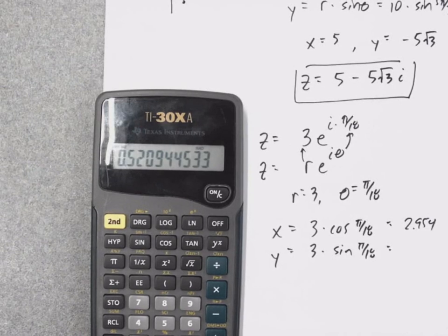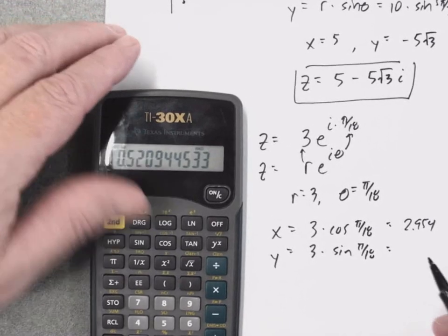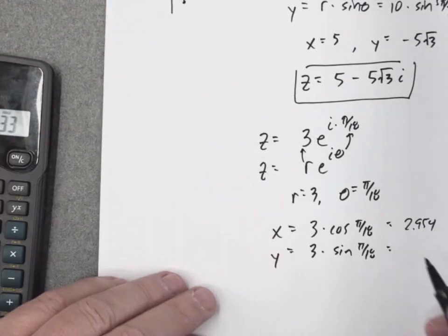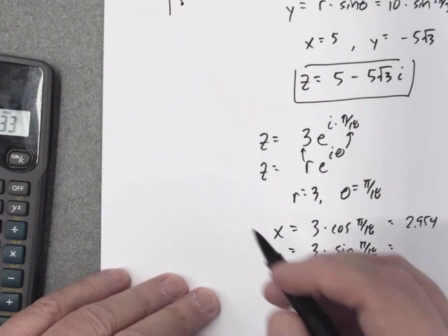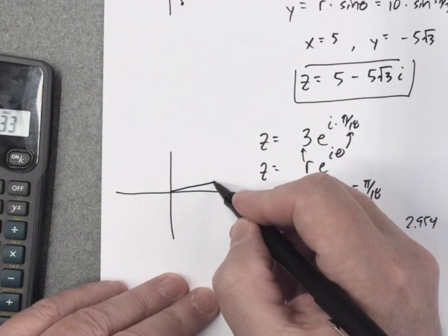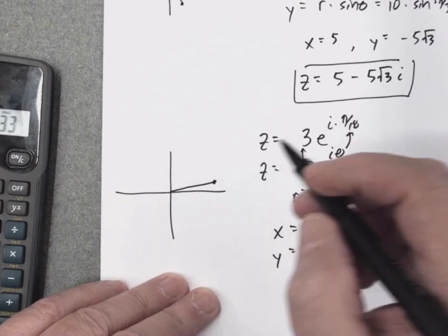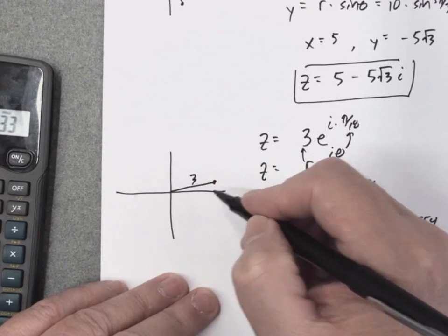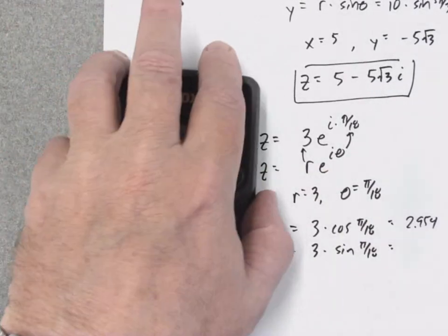All right. Oh, you know what, I didn't graph this. I was looking up here and I was thinking, wow. Pi over 18, obviously it's probably right about here somewhere. So this is the distance of 3 and that's pi over 18, so it looks like I'm in the first quadrant.